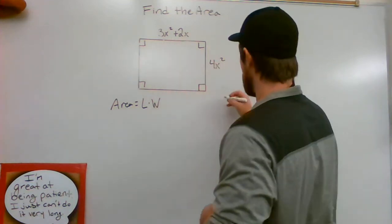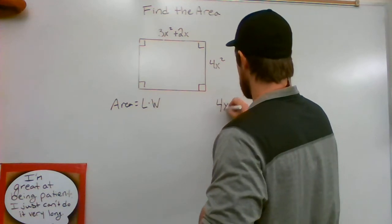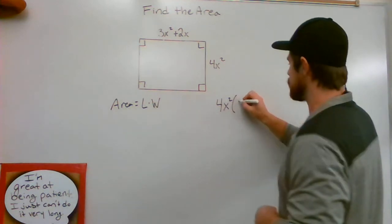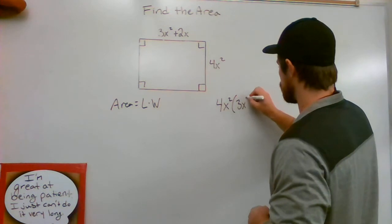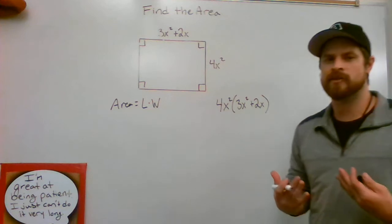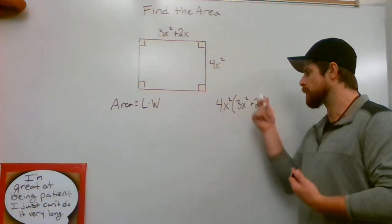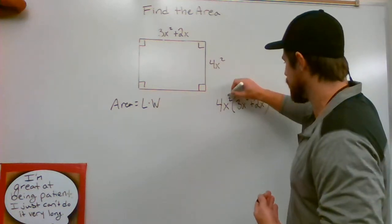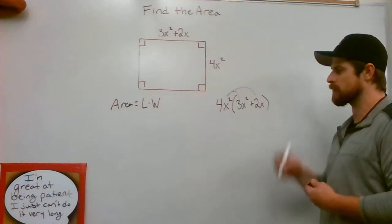This times both parts would look simply like this: 4x squared times 3x squared plus 2x. So I'm going to distribute 4x squared to both parts. I like to draw these lines just to remind myself not to forget about doing the second part.